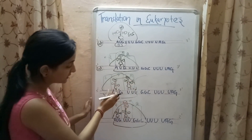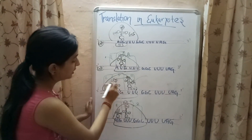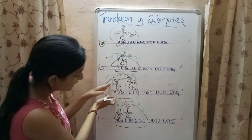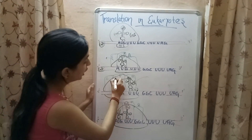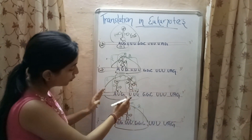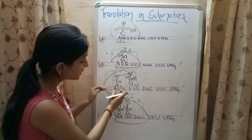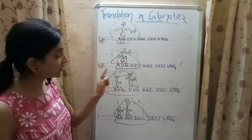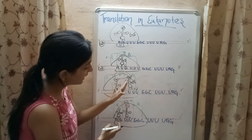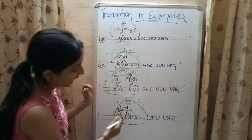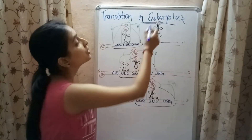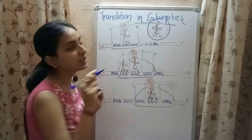After peptide bond formation, the amino acid is transferred from the initiator tRNA at the P site to the tRNA at the A site. At the same time, the ribosome moves one triplet forward along the mRNA. The initiator tRNA, previously at the P site, moves to the E site and exits the ribosome. The A site tRNA moves to the P site, and the A site is now empty and ready to accept a new charged tRNA molecule.